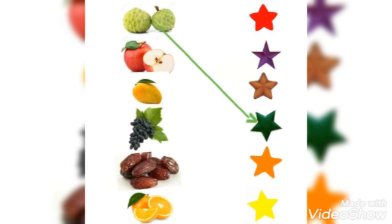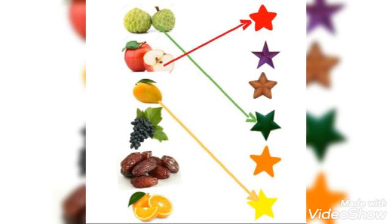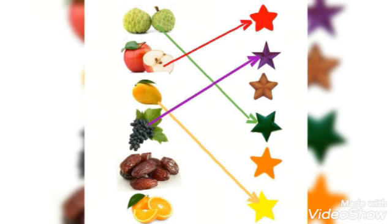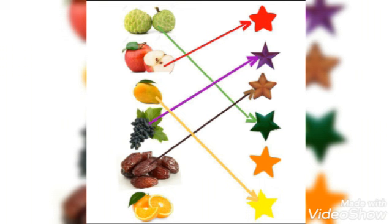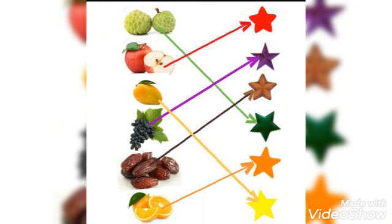First one — custard apple, right? Green custard apple, green star. Next you have to match red apple with red star. Yes, very good! Like that you have to match the fruits with stars. The next picture is mango — yellow mango with yellow star. Yes, you are right! The next picture is grapes — purple grapes with purple star. Very good! Then dates — brown color dates, so you have to match with brown star. Very good!